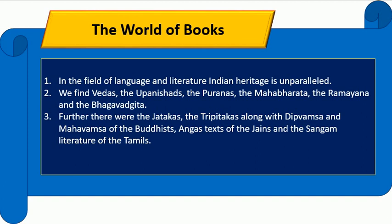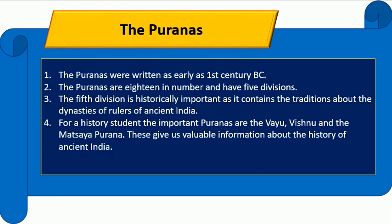In the field of language and literature, Indian heritage is unparalleled. We find Vedas, the Upanishads, the Puranas, the Mahabharata, the Ramayana, and Bhagavad Gita. Further, there are Jatakas, the Tri-Pitakas, along with Deep Vamsa and Mahavamsa of Buddhists, Angas and texts of Jains, and the Sangam literature of Tamils.